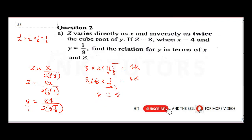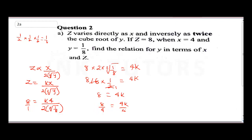To find k, divide both sides by 4: 8/4 = 4k/4, so k = 2.